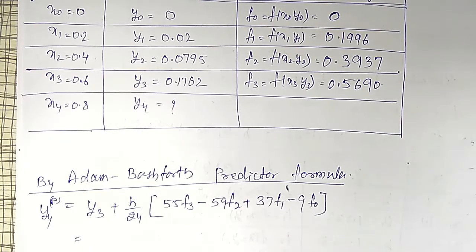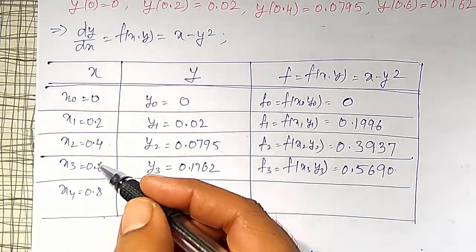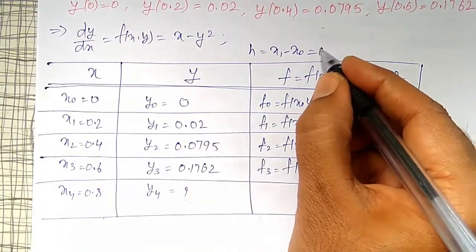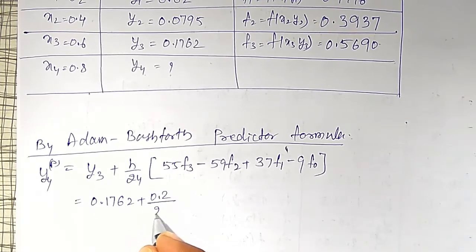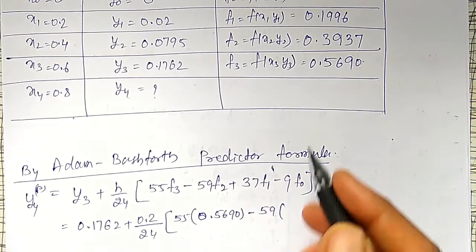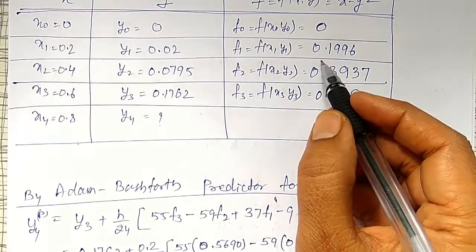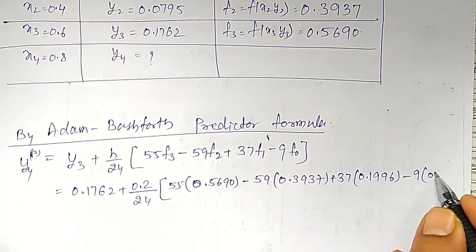Substituting all these values: y3 value is 0.1762, and h value — the difference between two consecutive x values — is x1 minus x0 = 0.2 minus 0 = 0.2. So: 0.1762 plus 0.2/24 into (55 times f3 = 0.5690, minus 59 times f2 = 0.3937, plus 37 times f1 = 0.1996, minus 9 times f0 = 0).